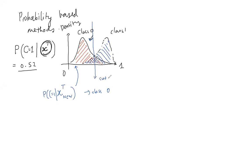The logistic regression model is based on odds: the probability of Y=1 divided by the probability of Y=0. Taking the log of the odds gives a linear expression in the beta coefficients and predictors. Rearranging yields the probability of class 1 given the attribute vector as 1 divided by (1 + exp(−(beta_0 + beta_1*x_1 + ...))). This is the logistic function.